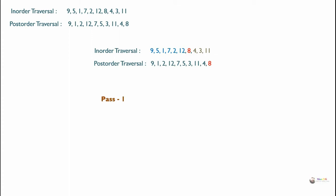So in the first pass, the root is 8. The elements 9, 5, 1, 7, 2, and 12 form the left subtree, and 4, 3, and 11 form the right subtree.